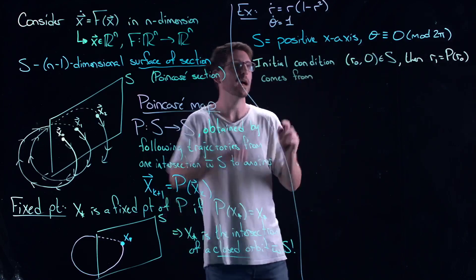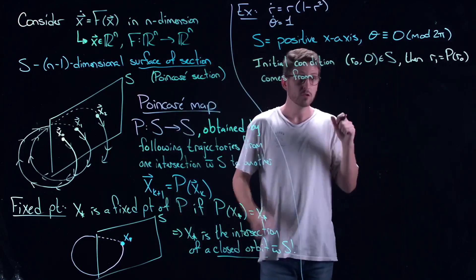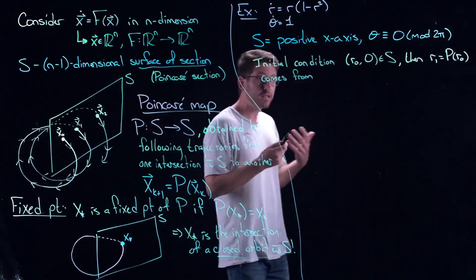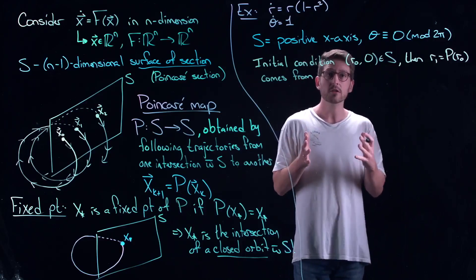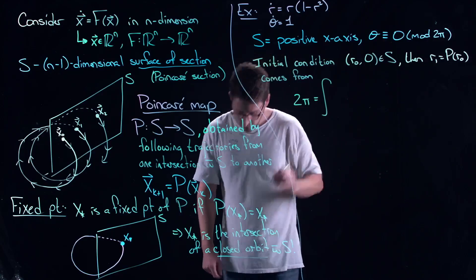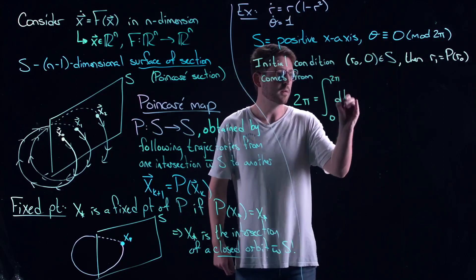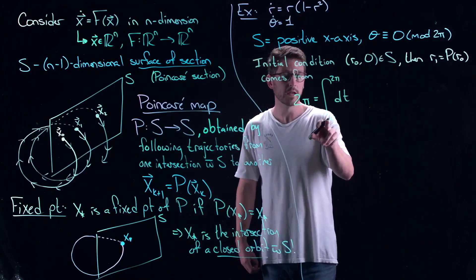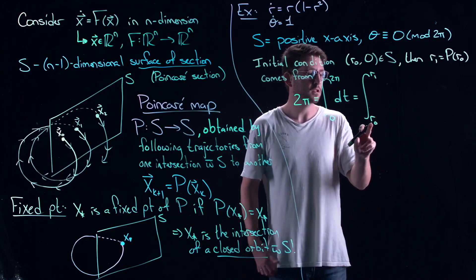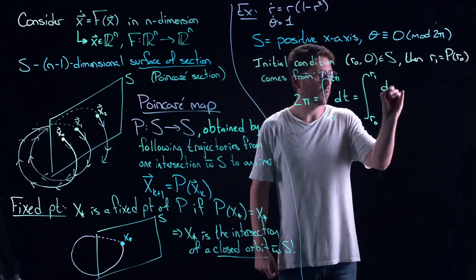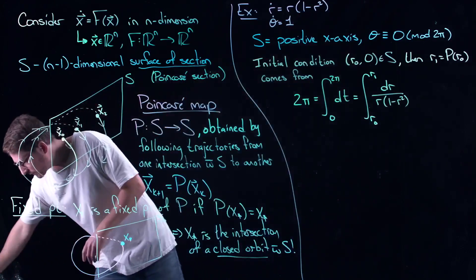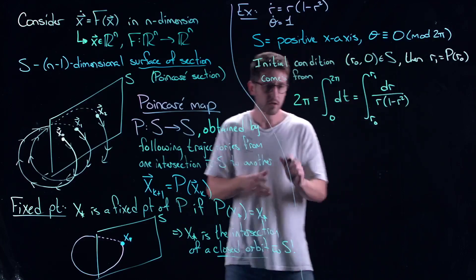I'm going to do the same kind of tricks I did back when we looked at bottlenecks. We take these things and trivially turn them into integrals, then use substitution. This is one full theta phase around the circle, and we used substitution to turn these into integrals in terms of the dependent variables — starting from R0, going to R1, and integrating 1 over the R vector field. I'll leave this for you to have a little fun with — you can evaluate this and isolate for R1.